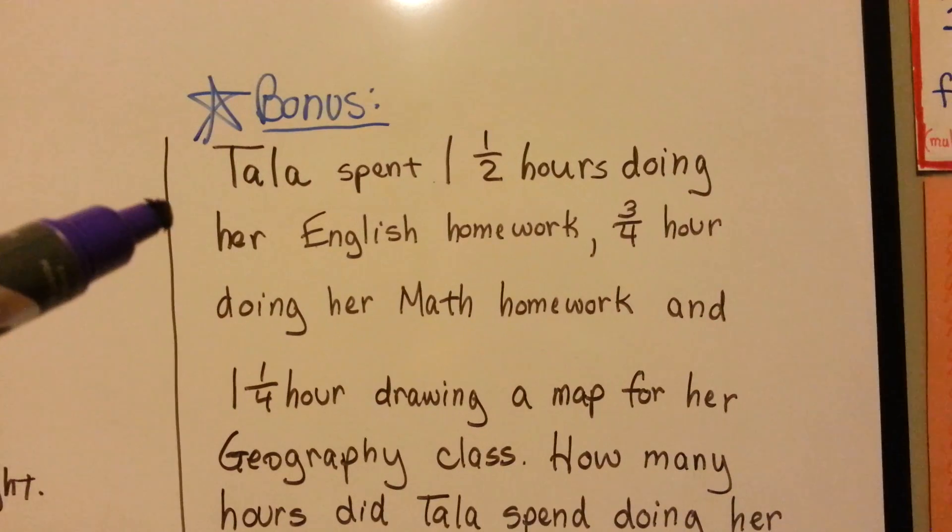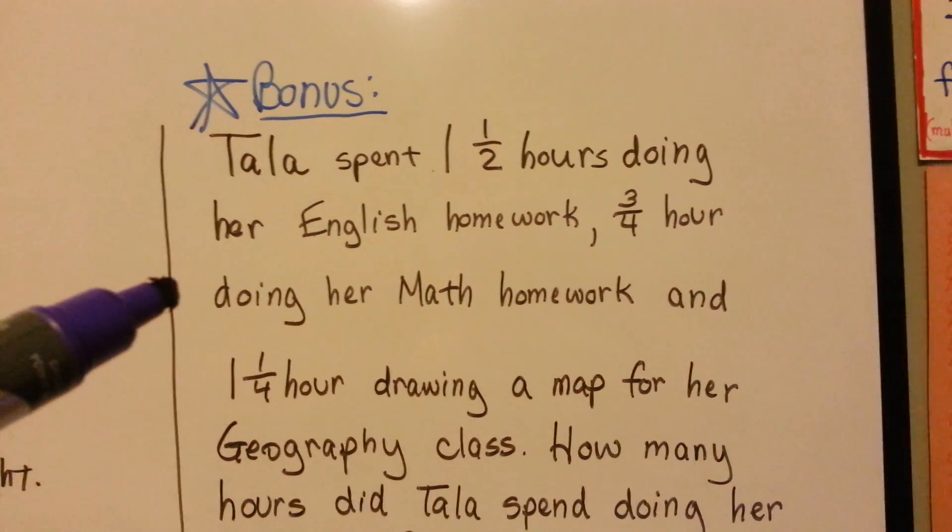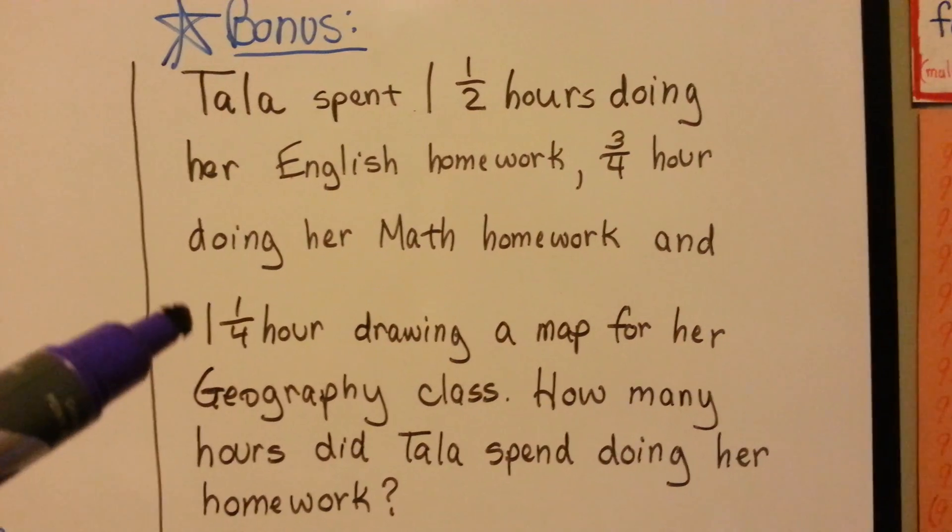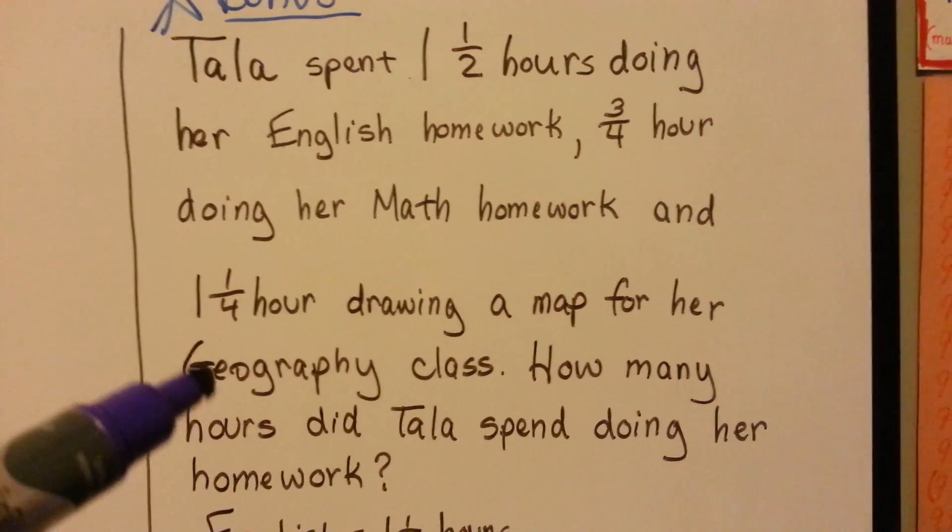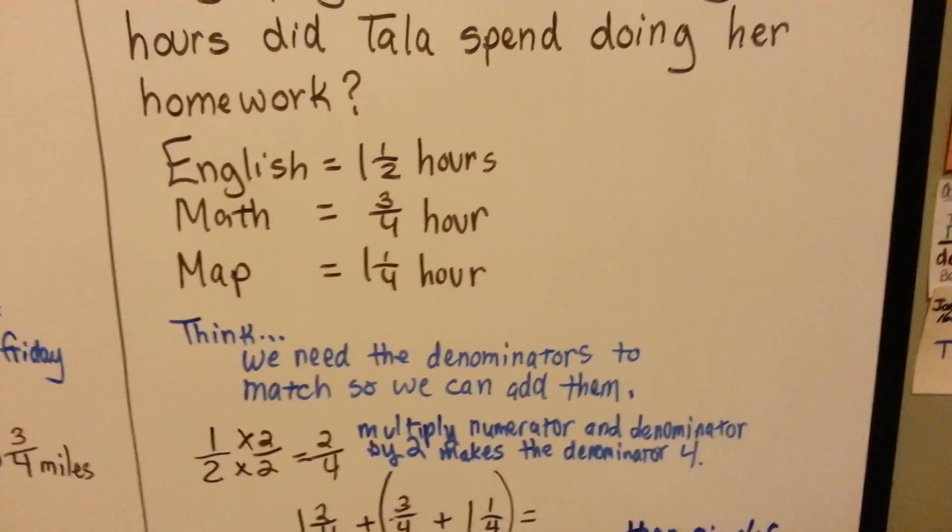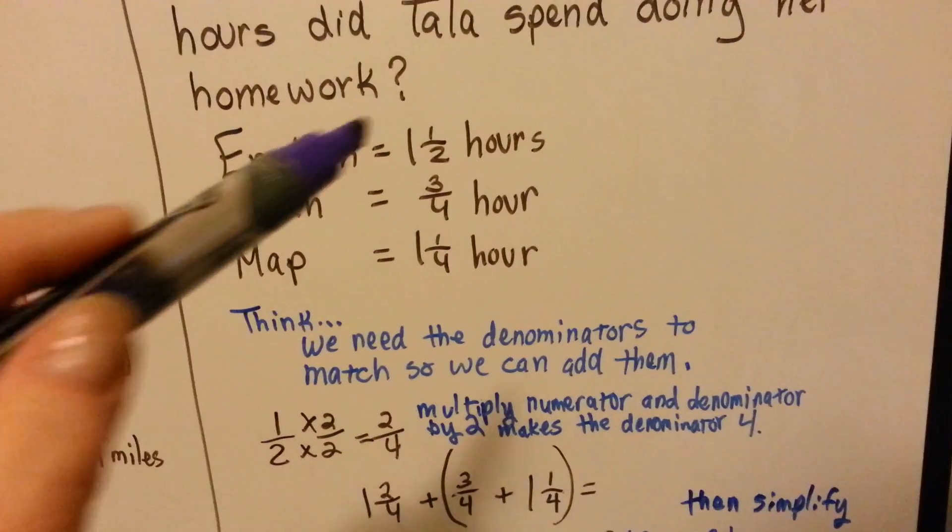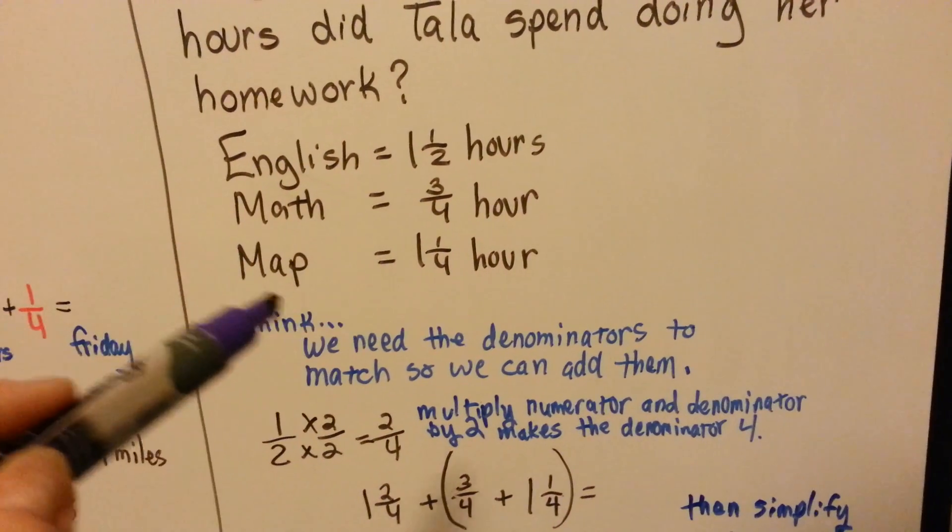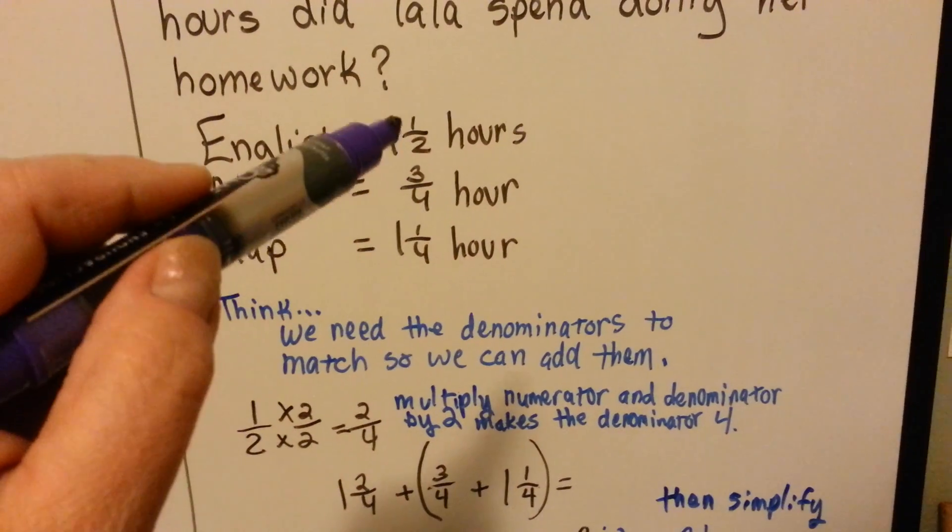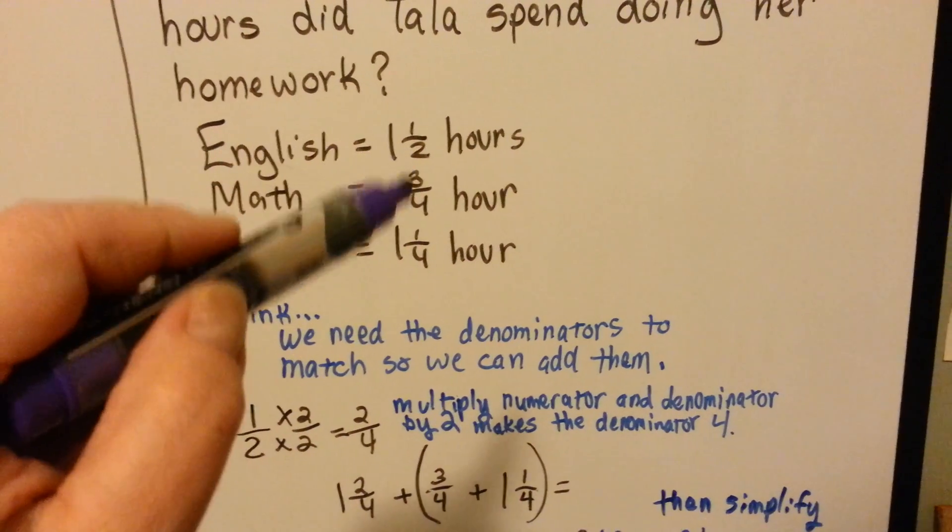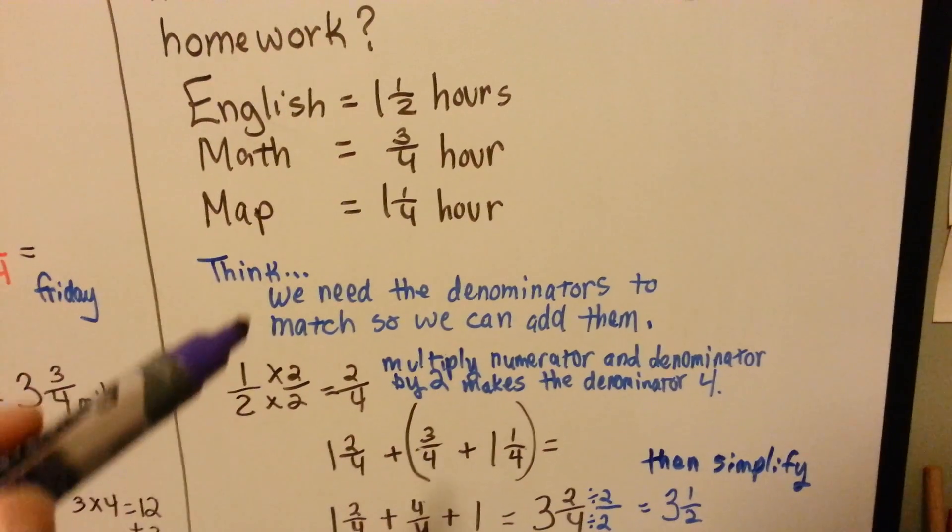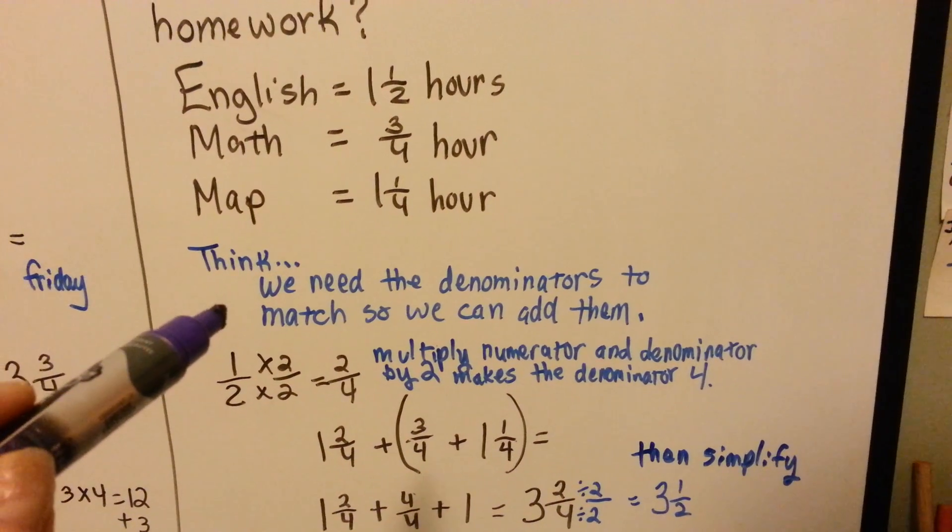Tala spent an hour and a half doing her English homework, 3 fourths of an hour doing her math homework, and 1 and 1 quarter hour drawing a map for her geography class homework. How many hours did Tala spend doing her homework? English was 1 and a half, math was 3 fourths, and doing the map for geography was 1 and 1 fourth. But do you notice that it has a different denominator? How are we going to add these together if that's got a different denominator up there for English? We need the denominators to match so we can add them.